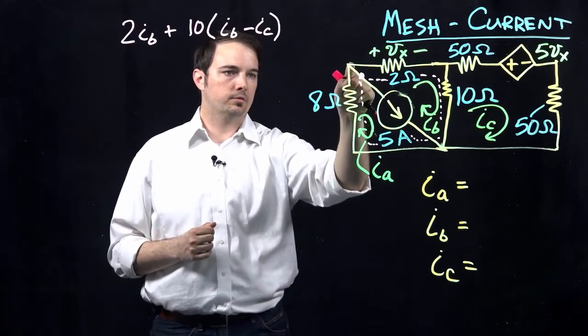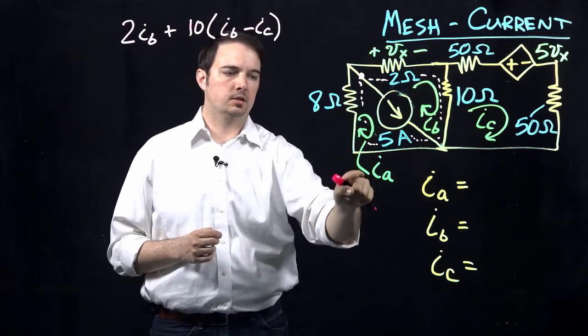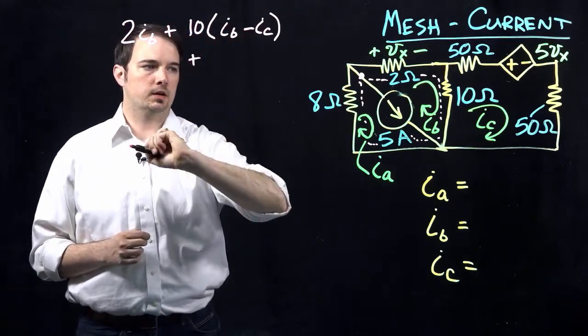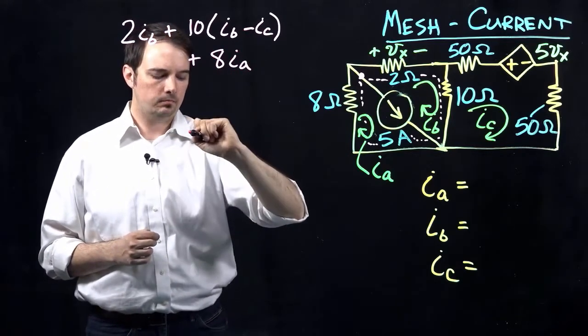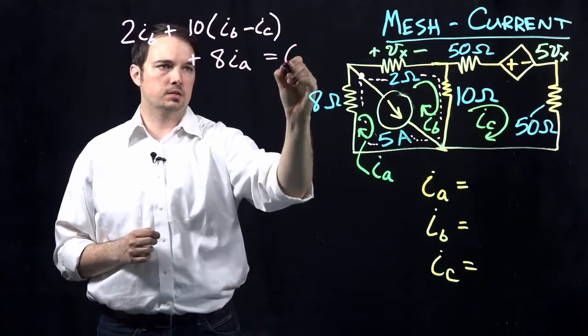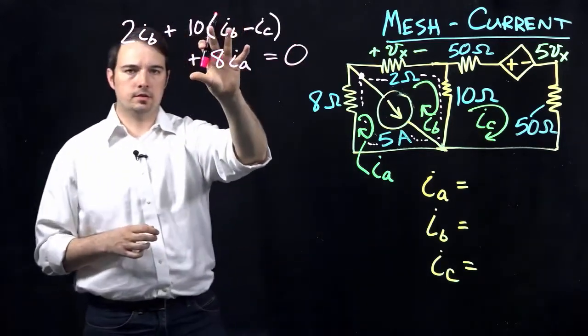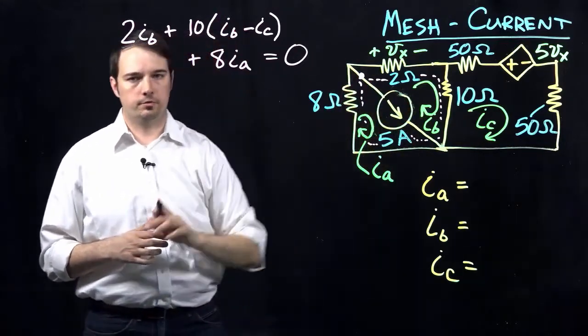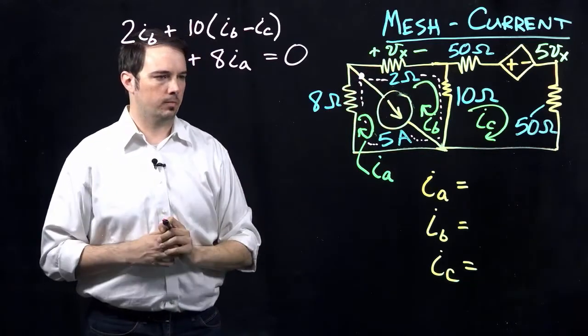Coming around here, I have no resistor on the bottom, but then I have this 8 ohm resistor which is only impacted by mesh current IA. So plus 8 times IA, and we know this has to sum to equal 0. This is the mesh current equation around this super mesh that we've defined due to the current source sitting between two of our mesh currents.